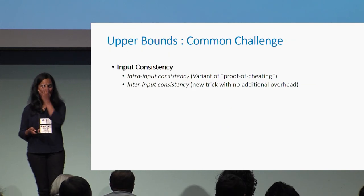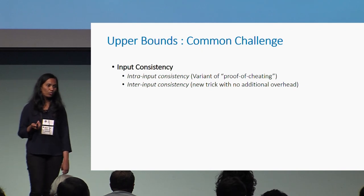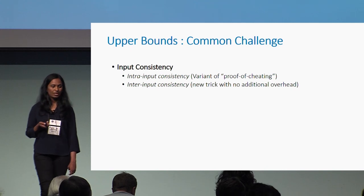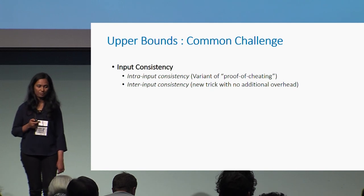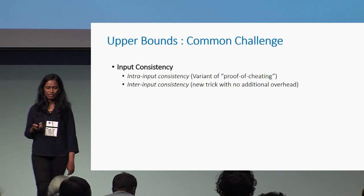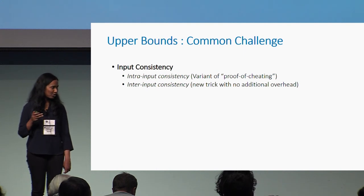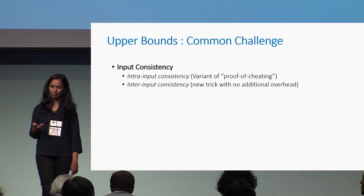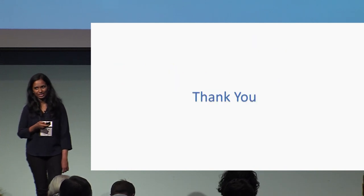There is a common challenge across all our upper bounds: our protocols involve multiple executions, raising the concern of input consistency — ensuring a corrupt party uses the same input in all executions. We dealt with two kinds of input consistency issues. First, within an execution, we ensure a party uses the same input across garbled circuits in that execution, using a variant of the existing proof-of-cheating mechanism popular in the garbled circuits literature. Second, to enforce input consistency across executions, we introduced a new trick specific to the three-party case that enforces consistent input use with absolutely no additional overhead over our protocol. With this, I conclude my presentation.